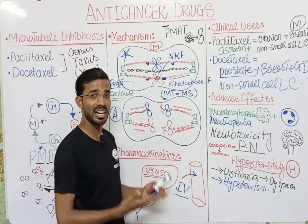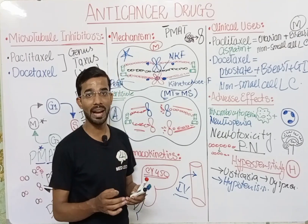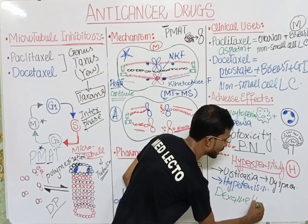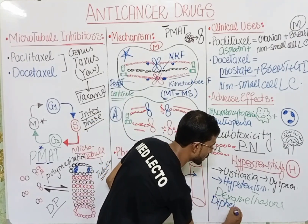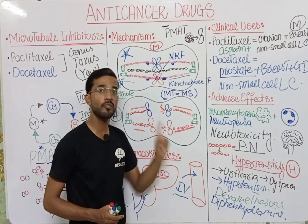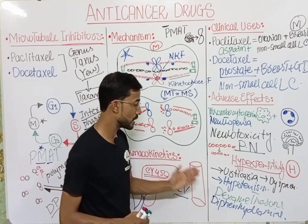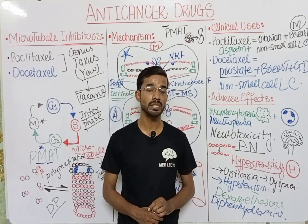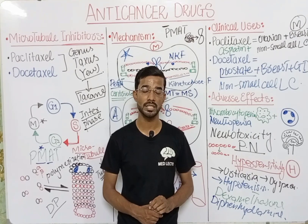Due to the hypersensitivity effects — urticaria, hypotension, and dyspnea — dexamethasone and diphenhydramine should be prescribed alongside paclitaxel to reduce these adverse effects. This is all about the microtubule inhibitors paclitaxel and docetaxel. If you have any questions, you may ask in the comment section. Thank you.